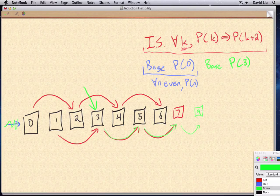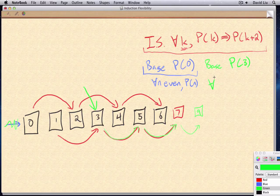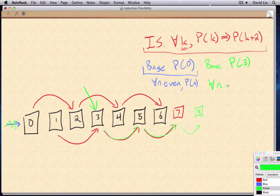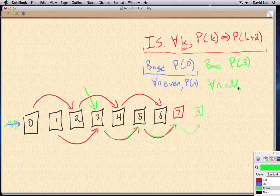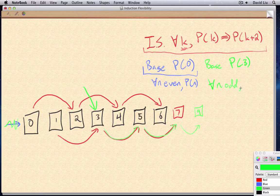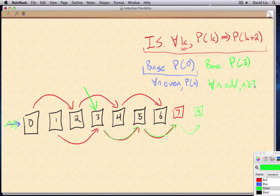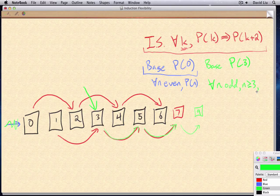So what our proof would show is that for all odd numbers greater than or equal to three, p of n holds.